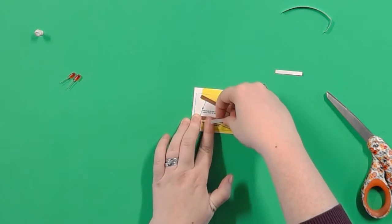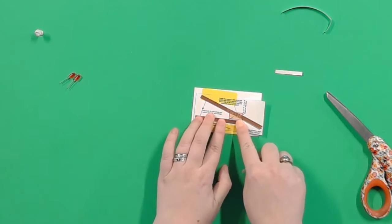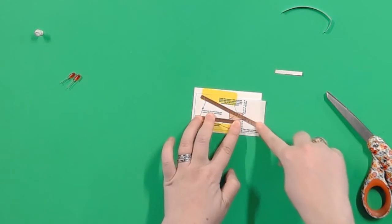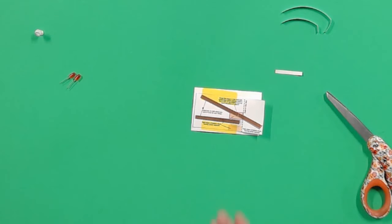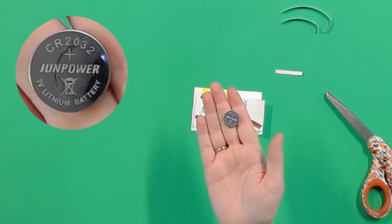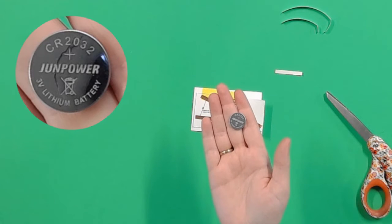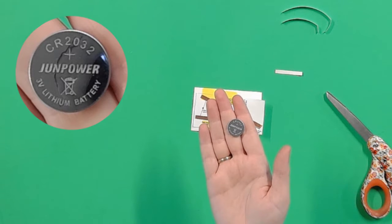These batteries have a positive and negative side, and it's important we get it right or the electricity won't flow through our circuit correctly. The positive side is easy to find. It has a big positive sign on it, and it's the only side with any writing. We want the positive side up, so just make sure you can always see the writing and you'll always get it right.